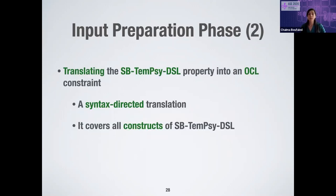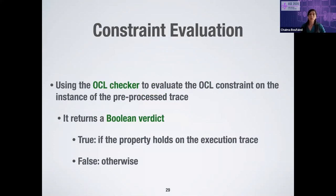We then translate the SBTAMC DSL property into an OCL constraint; our translation is syntax-directed and covers all constructs of our DSL. For the checking part, we use an OCL checker that evaluates the OCL constraint on the instance of the pre-processed trace. The OCL checker returns a Boolean verdict: true if the property holds on the execution trace, or false if the property is violated.